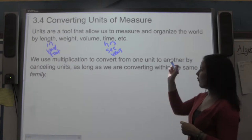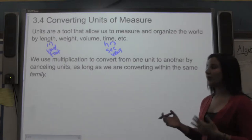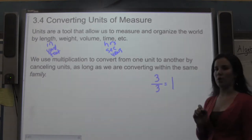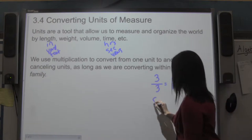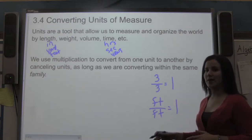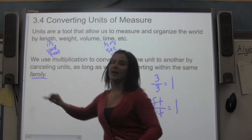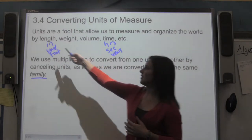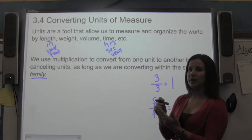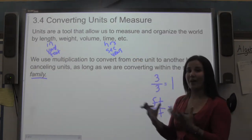We use multiplication and crossing out — or canceling — units in order to convert from one unit to another. The reason we can cancel units is because a fraction like 3 over 3 equals one whole. I can do the same thing with units: feet over feet equals one whole. We can only cancel within the same family — you cannot convert from feet to hours. It has to be feet to inches, or hours to years.